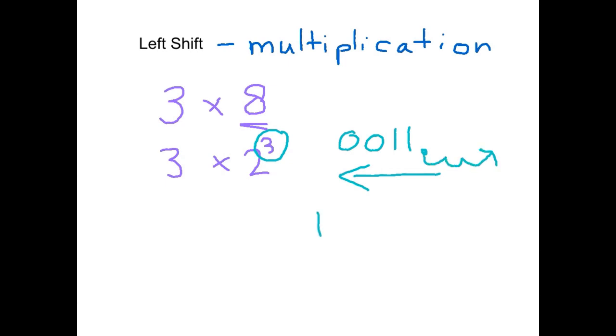So we end up with one, one, zero, zero, zero. Three times eight should be 24. We've shifted everything three points to the left.